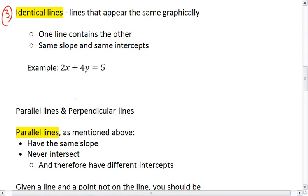which is in standard form, we could multiply both sides by 2, giving 4X plus 8Y equals 10. These are the same line. So if we were to graph it, we would get one line. And this is what makes them identical lines.